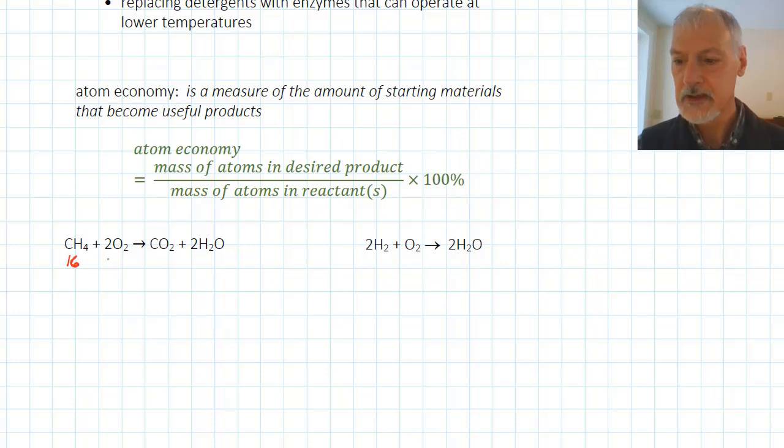So methane is 16. I have two oxygens at 32, and my desired product is water. So I have two of those at 18. If I now determine the total mass here of these species, I get 80, and the total mass of my desired product comes out to 36. So hence my atom economy would be 36 over 80 times 100, or 45%.